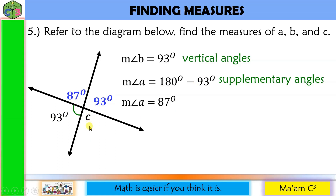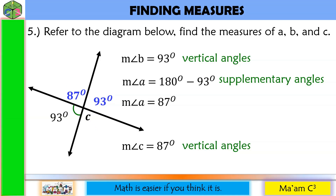Now for angle C — it is opposite this angle, so the measure of angle C is also 87 degrees, because opposite angles are vertical angles and vertical angles are always congruent. So angle C is 87 degrees. To check: 93 plus 87 plus 93 plus 87 is 360 degrees — the complete rotation. Therefore, our answers are correct.